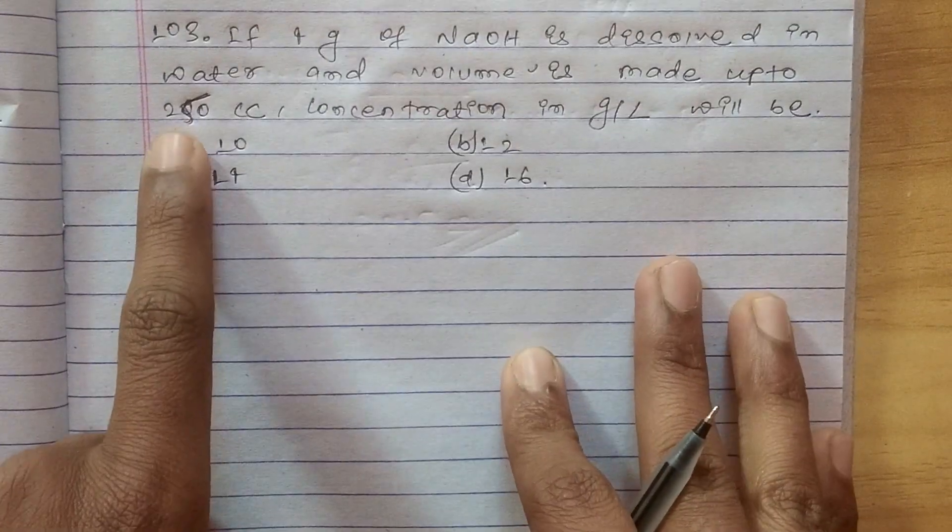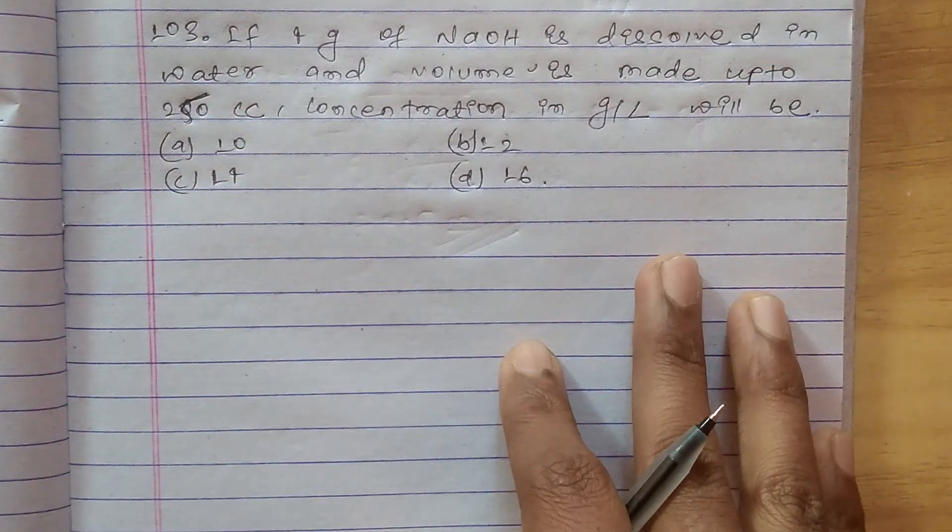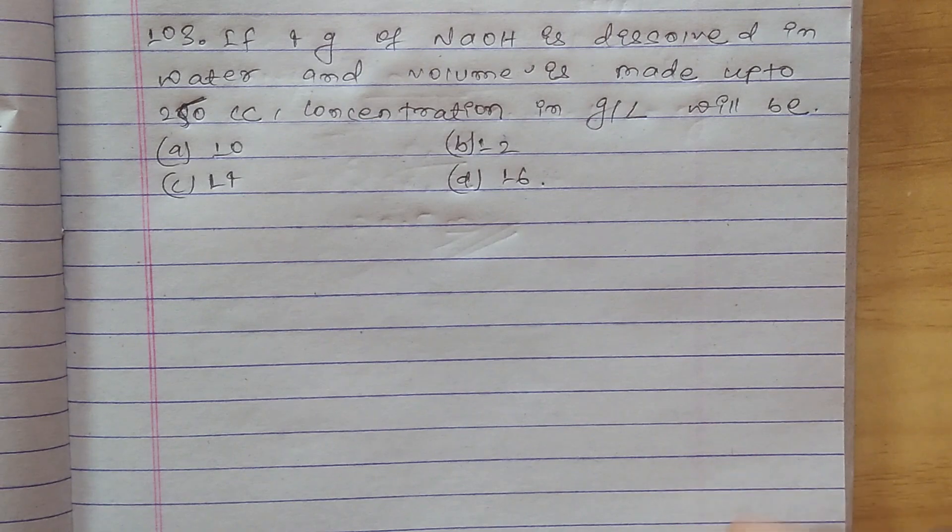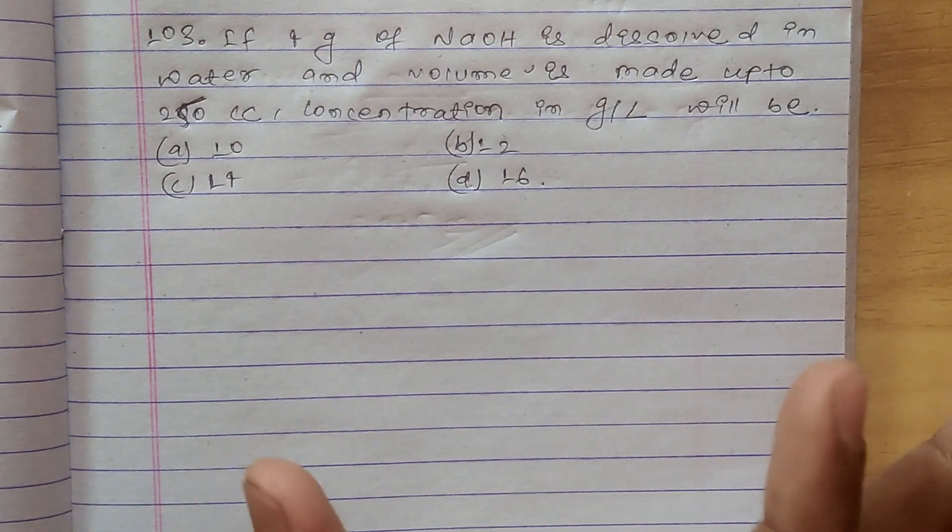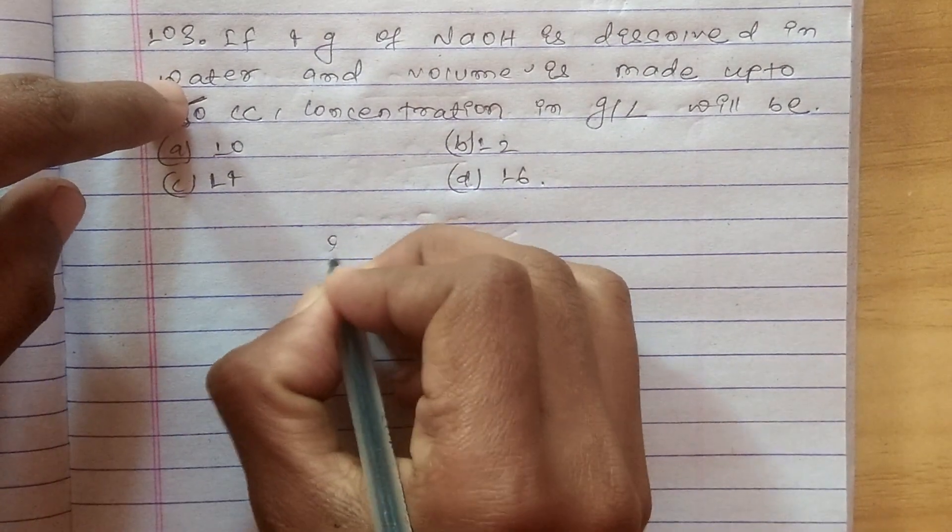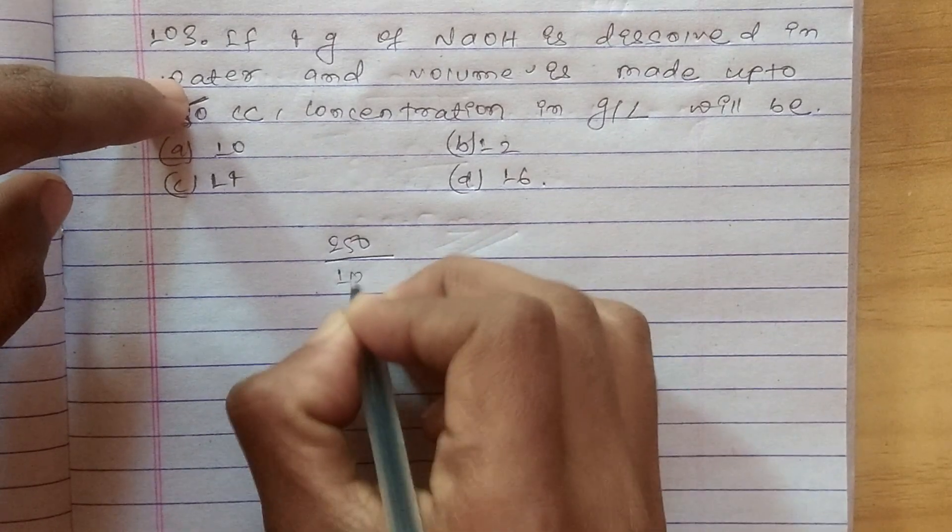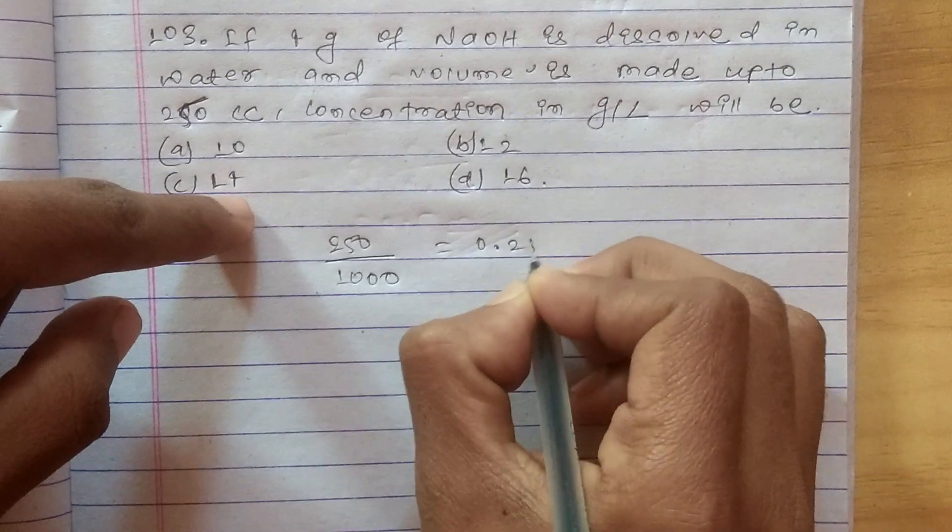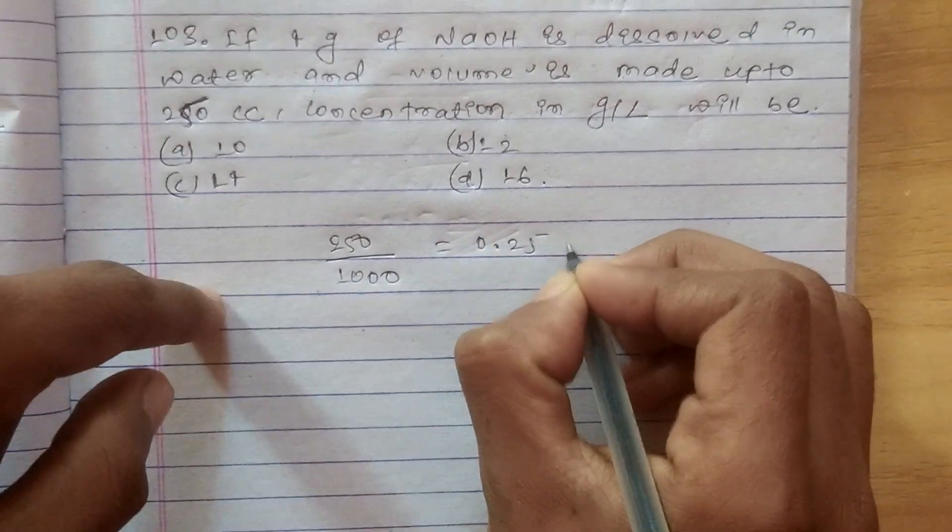Now, 250 cc will be 250 ml. This is what you need to do - cubic centimeter is equal to ml.